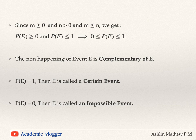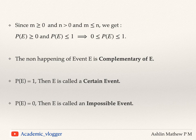If m is greater than or equal to 0, n is greater than 0, and m is less than or equal to n, then we can say that the probability of E is greater than or equal to 0. If there is no favorable event, then the probability of E is 0. We also know that probability of E is less than or equal to 1. This implies that the probability value p lies between 0 and 1, including both, so p lies in the closed interval [0, 1].